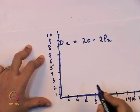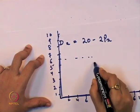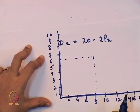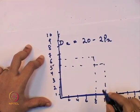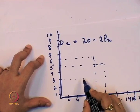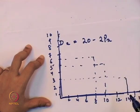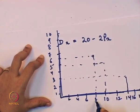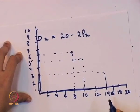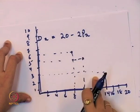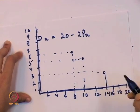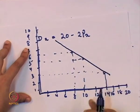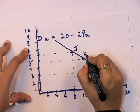When the price is 6, the quantity demanded is 8 — giving us one point on the demand curve. When the price is 5, the quantity demanded is 10 — giving us a second point. When the price is 3, the quantity demanded is 14 — giving us a third point. If we join these three points, we get the demand curve. Call them point J, point K, and a third point.